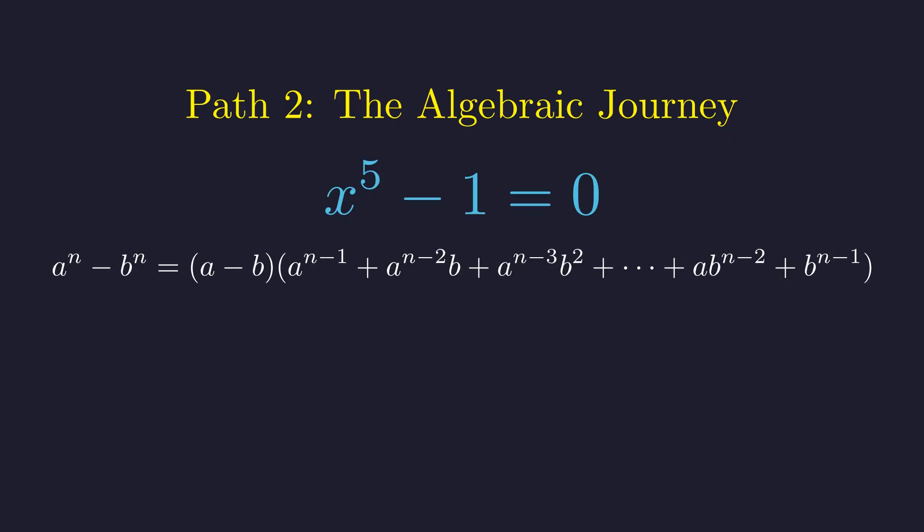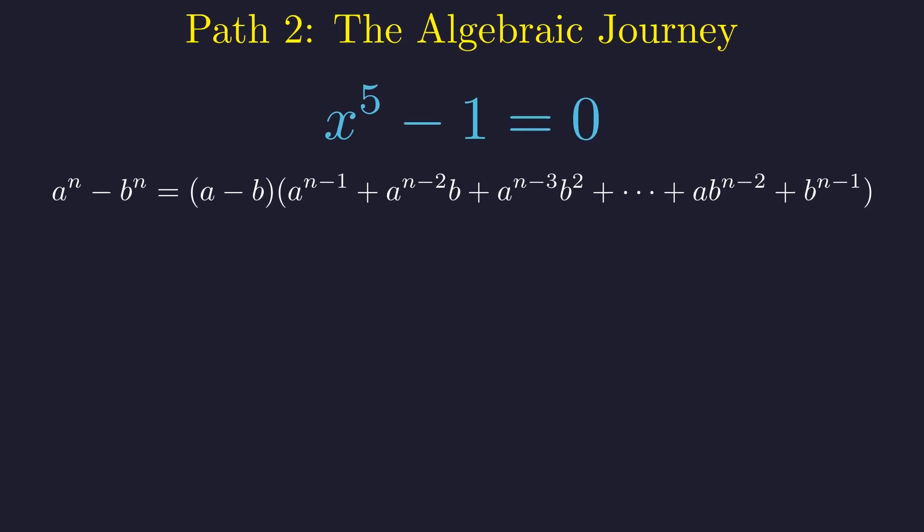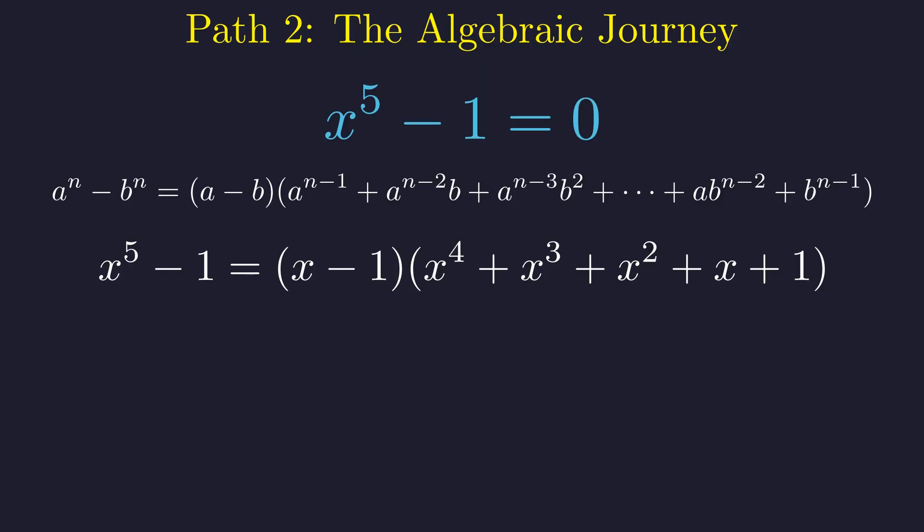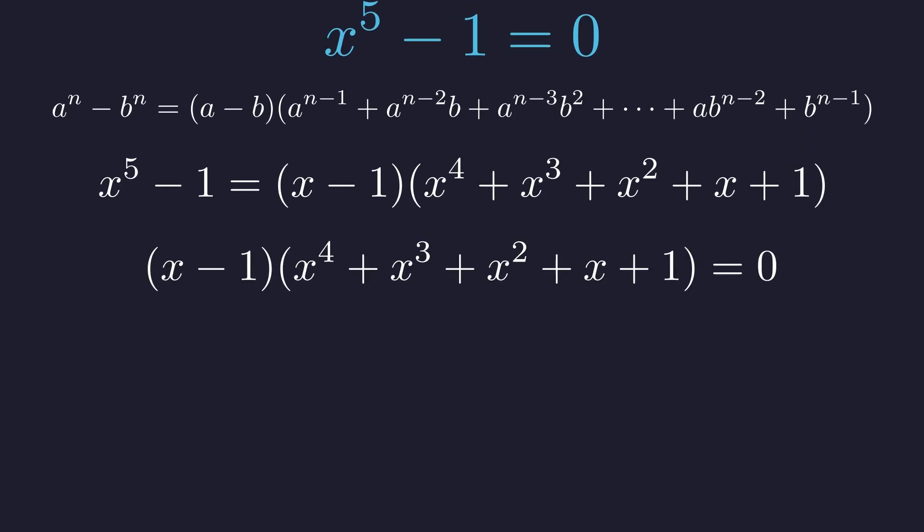The general formula for factoring a to the n minus b to the n involves this pattern. Applying this to our case with a equals x and b equals 1, we get this factorization. Setting this equal to 0, we can find all solutions. The first factor gives us x equals 1, which we already knew.